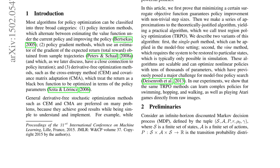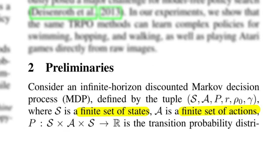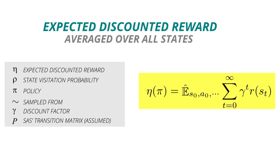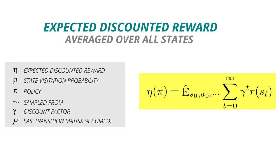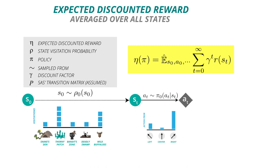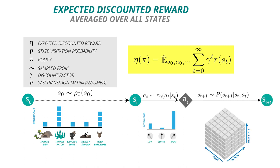Let us consider a finite state, finite action, infinite horizon MDP. Now if you look at the equation on screen, eta of pi is nothing but expected discounted reward. The initial state is sampled from the prior state visitation distribution. The actions are sampled from policy pi, and the next state is chosen based on the S-A-S' 3D transition probability matrix.